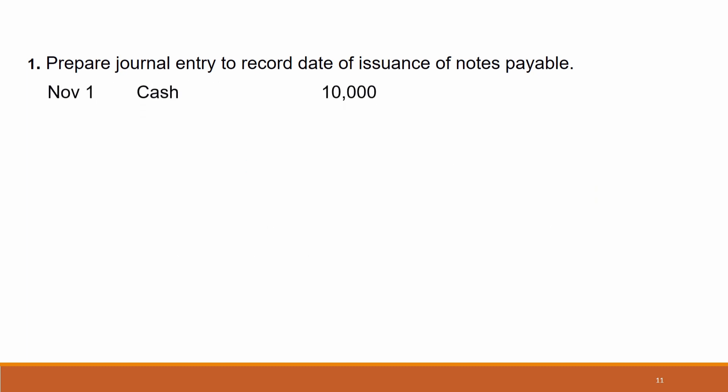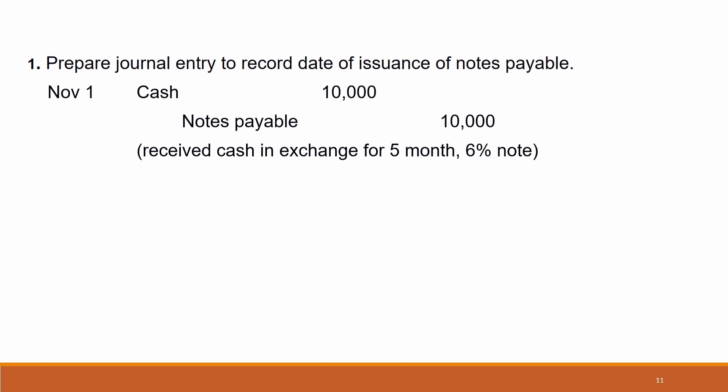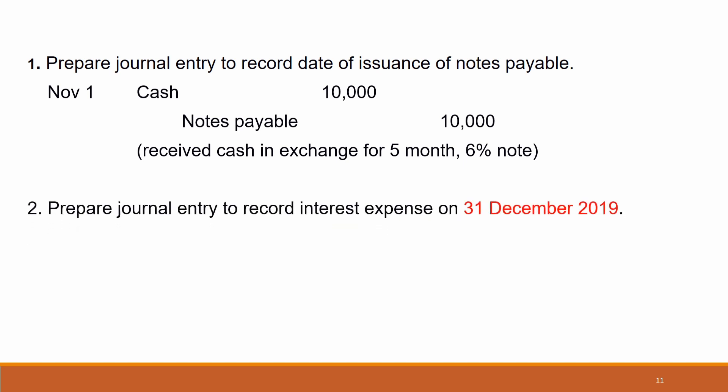Journal entry number one: record cash received on 1st November. Debit Cash RM10,000, Credit Notes Payable RM10,000. Narration: received cash in exchange for 5-month, 6% notes payable.